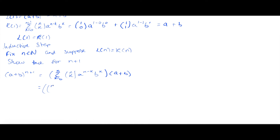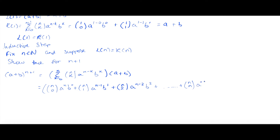The summation is: n-choose-0 times a to the n, plus n-choose-1 times a to the n minus 1 times b to the 1, plus n-choose-2 times a to the n minus 2 times b squared, and so on up to n-choose-n times a to the 0 times b to the n. And this is times (a + b).